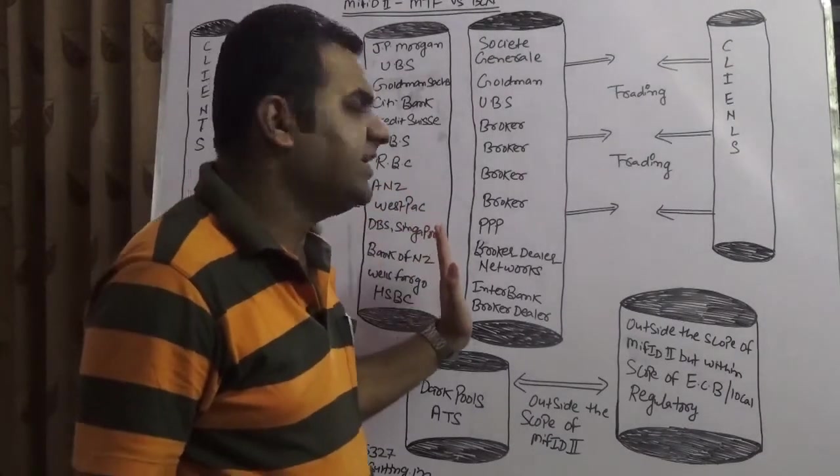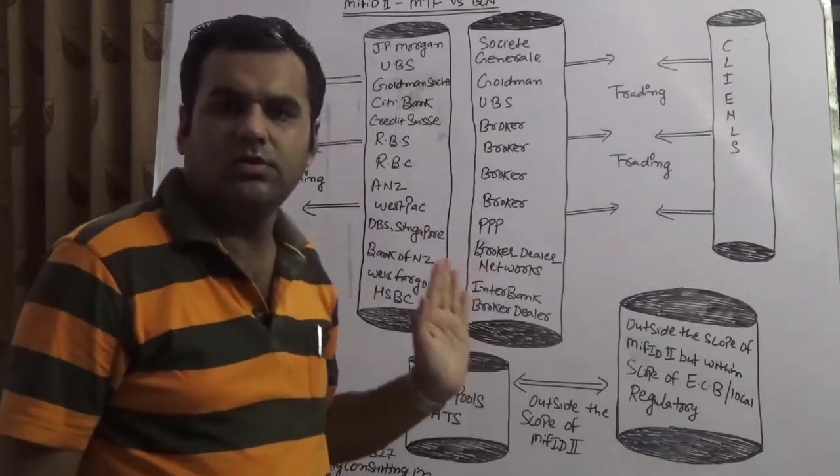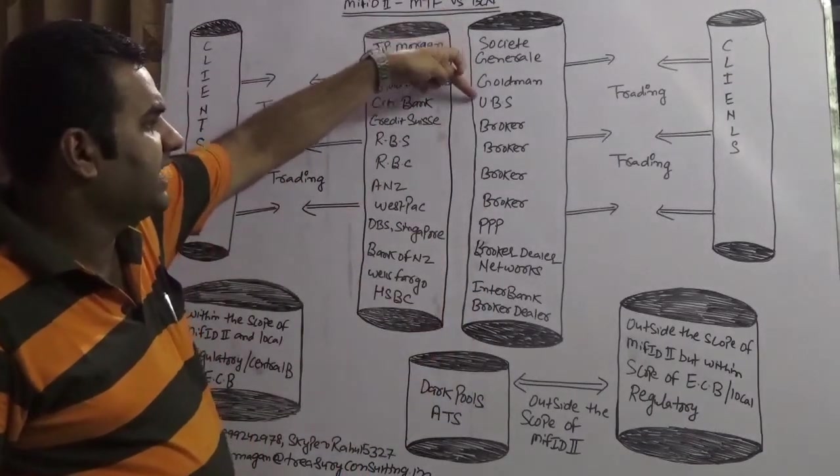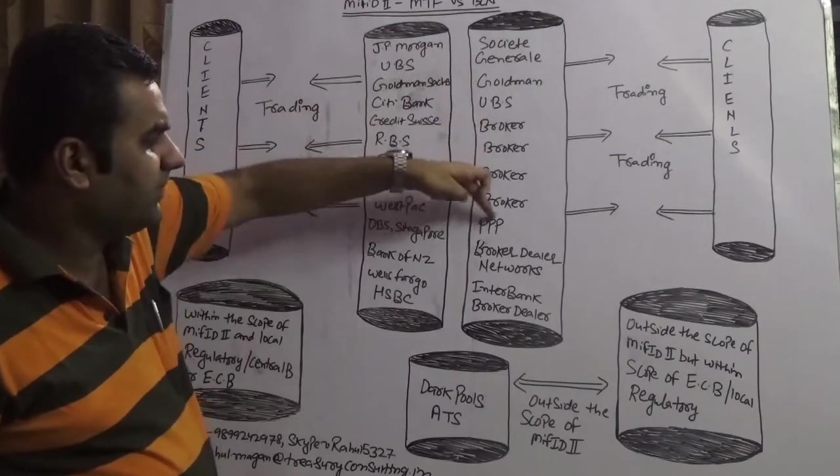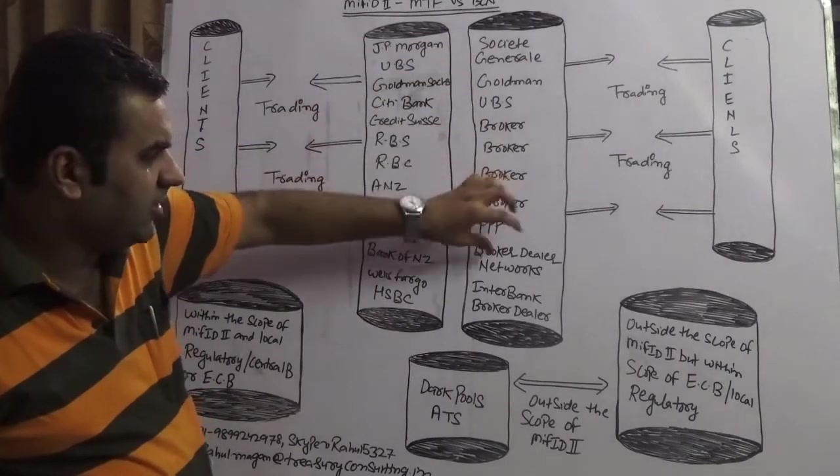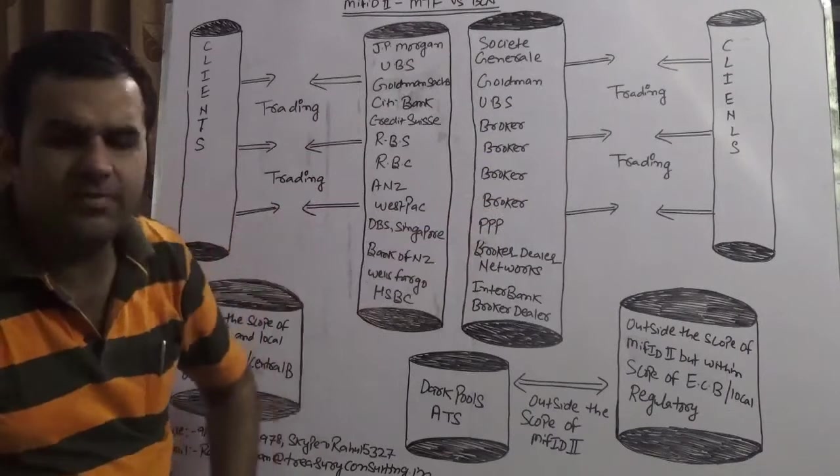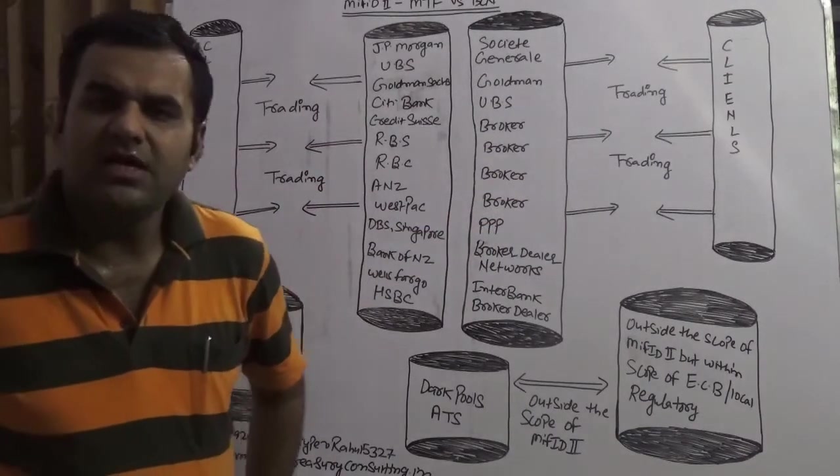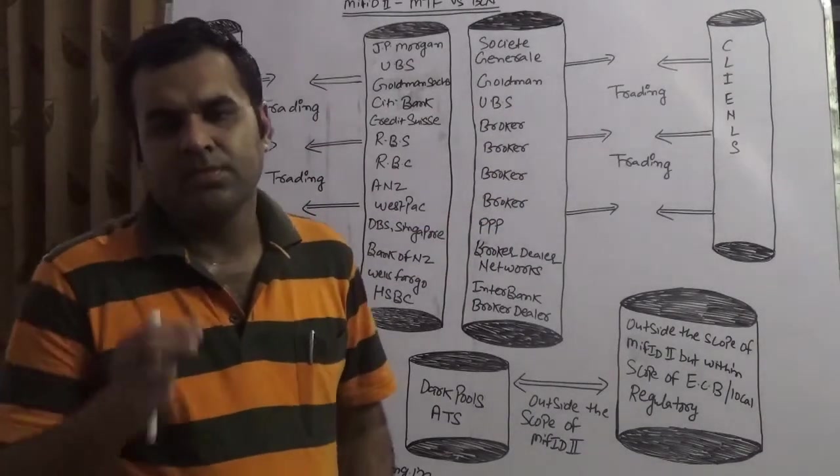Another site which we have created is the BCN which is broker crossing network: Society General, Goldman Sachs, UBS, broker broker broker, BPP desk, private placement platforms, broker dealer networks and interbank broker dealer networks. They are the one who participates in that.